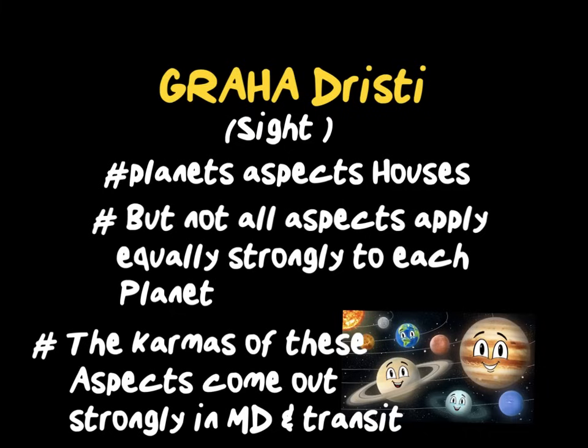Let's have an example. Let's say you've got Saturn in the first house of your chart. One of Saturn's strongest aspects — and he has many — is his third dristi sight aspect. That would therefore be onto your third house if he's in your ascendant. So during the Mahadasha of Saturn, you would have big issues with siblings and all third house factors. Or when Saturn returns to his natal place in your first house, he will have a definite dristi on that third house during that Saturn return.